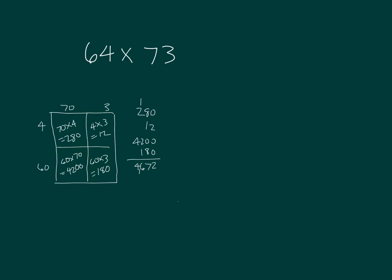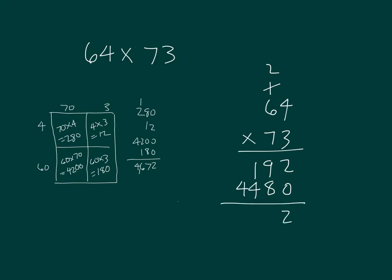Let's show the standard algorithm. That's 42 plus 2 is 44. Then we add those together. You'll notice here, 4,200 plus 280 gives us 4,480, and 180 plus 12 — that'd be the 64 times 3 — is 192.